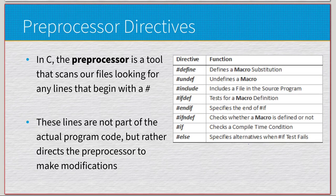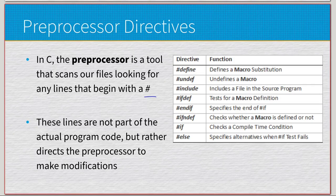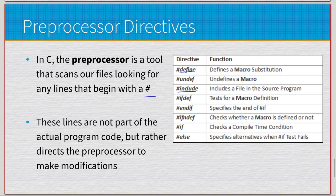Before showing an example, I want to mention the preprocessor, which we've used frequently with `#include`. In C, the preprocessor scans files looking for lines beginning with `#` — these lines are not part of the program code the compiler sees. The preprocessor directs modifications to the file. Directives we've used include `#include` to include files, and `#define` for macro substitution. We'll also use `#ifdef`, `#endif`, and `#ifndef` for header files.